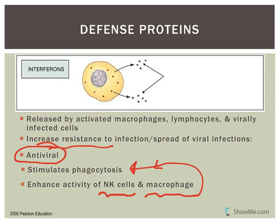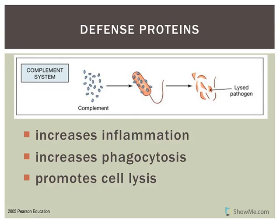Another defense protein is complement. Complement consists of plasma proteins that circulate in an inactive state, become attached or fixed to foreign cells, and are activated — becoming a major factor in the fight against foreign cells. The activation of complement is similar to the blood clotting cascade, an example of positive feedback regulation. Activation of complement results in increasing inflammation, increasing phagocytosis, and promoting lysis of cells — it destroys bacteria by promoting cell lysis.